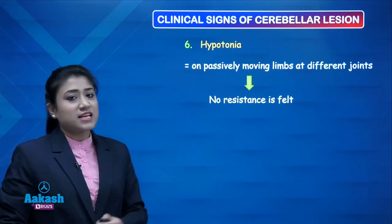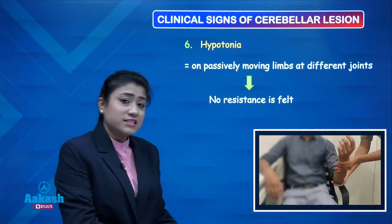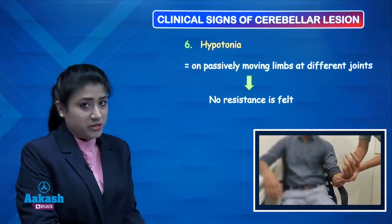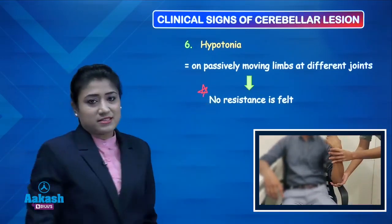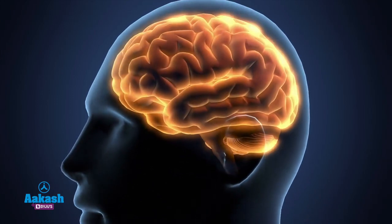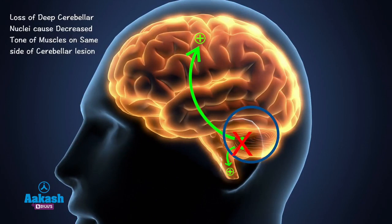The next sign is hypotonia. To check for hypotonia, if you passively move the limbs of a patient at different joints, no resistance is felt. Deep nuclei in the cerebellum send excitatory signals to the motor cortex and brainstem motor nuclei. Loss of deep cerebellum leads to loss of excitatory signals, causing decreased tone of muscles on the same side as the cerebellar lesion.